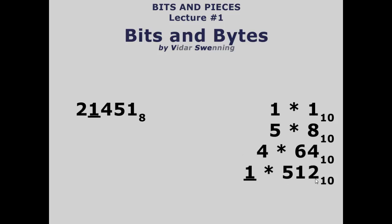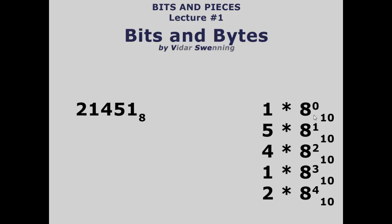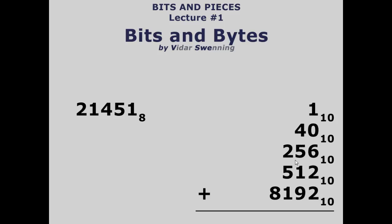The position values are eight to the power of zero, eight to the power of one, eight to the power of two, three, four, and so on. That's because we multiply by eight more each time. So we do: one times eight to the zero, five times eight to the one, and so on. What we get is: 1, 40, 256, 512, and 8192.